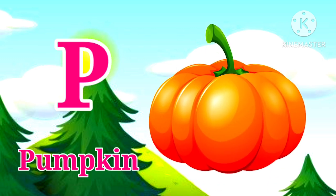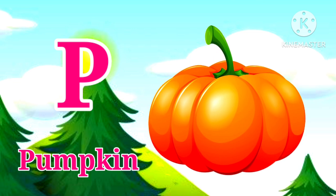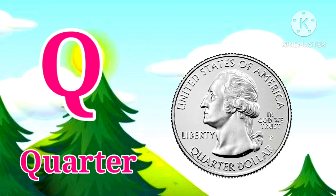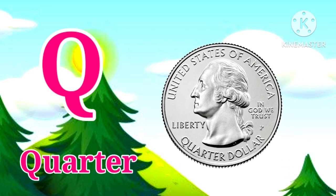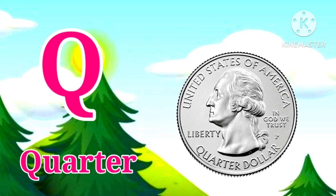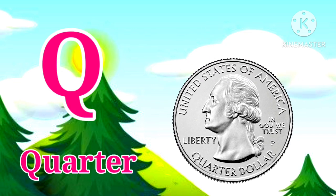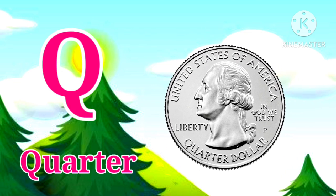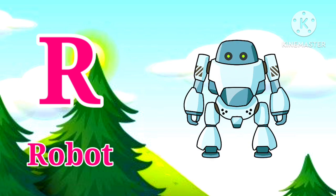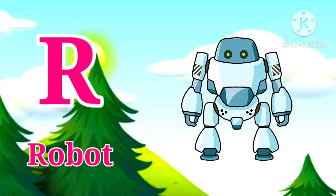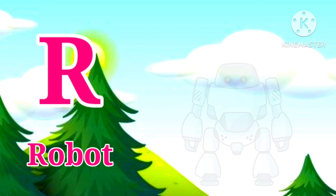P for Pumpkin. Pumpkin means Kaddu. Q for Quarter. Quarter means Sittah. R for Robot. Robot means Robot.